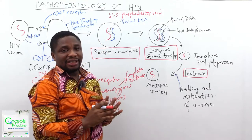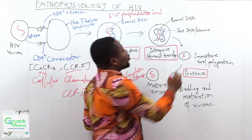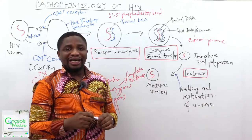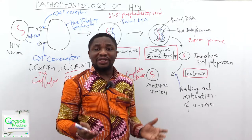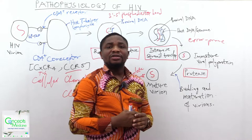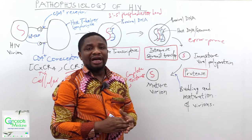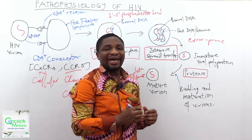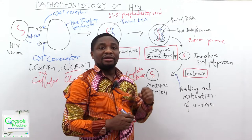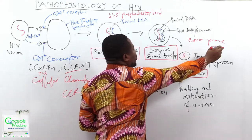Once integration takes place, the host DNA undergoes several replications that are error-prone. Because these replications are error-prone, they give rise to several billions of copies with different genomes. This makes it difficult to isolate the genomes and produce a vaccine, which is why it is difficult to treat HIV infection.